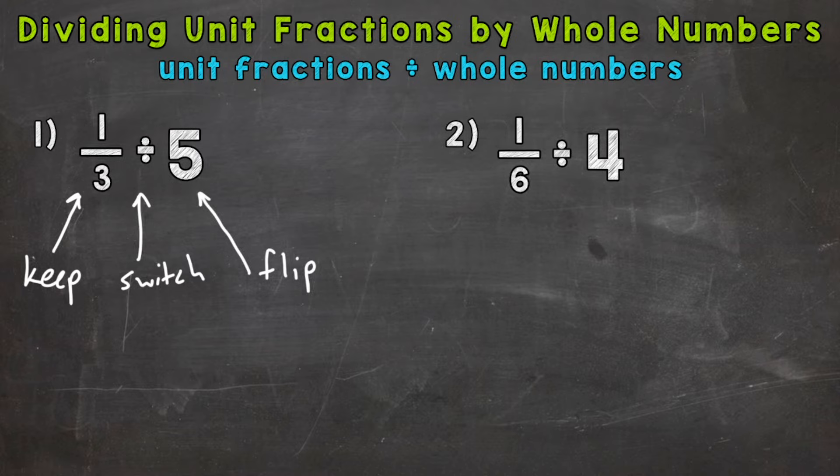We have our original problem, 1 third divided by 5. We are going to rewrite this problem as a multiplication problem. So we do that by keeping the first fraction or whole number. Whatever the case may be, when we're dividing fractions, you always keep that first fraction or number. Then we switch the division sign to a multiplication sign. Now, since we switched to the opposite of a division problem and changed it to multiplication, we need to flip that second fraction or number in order to keep this problem equivalent and give us the correct answer.